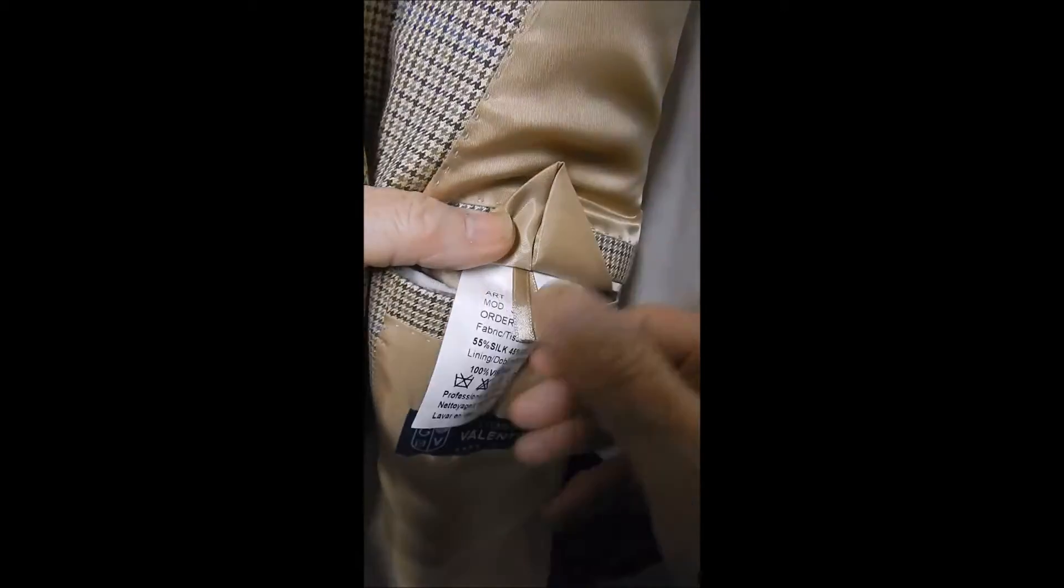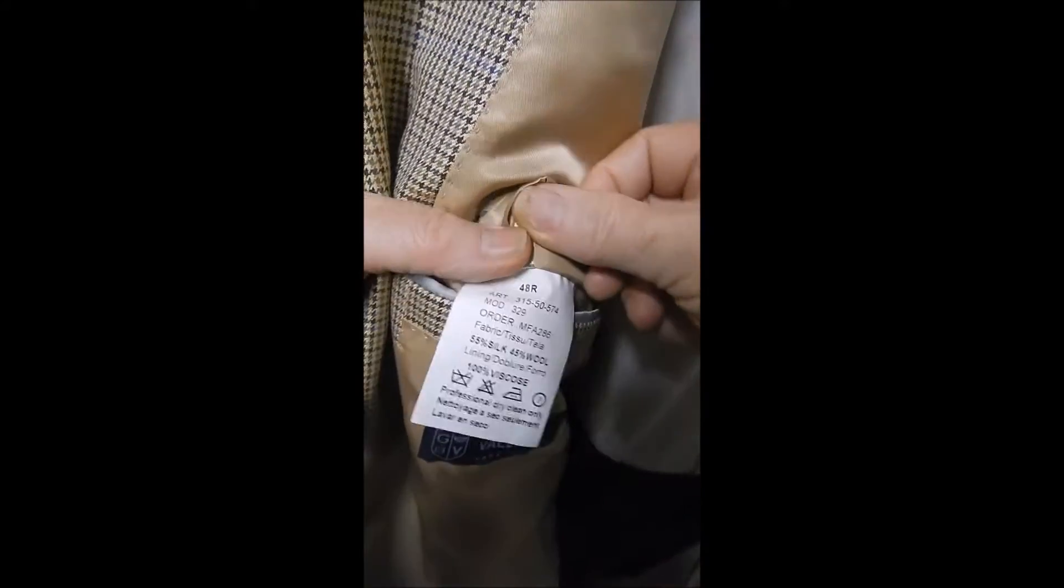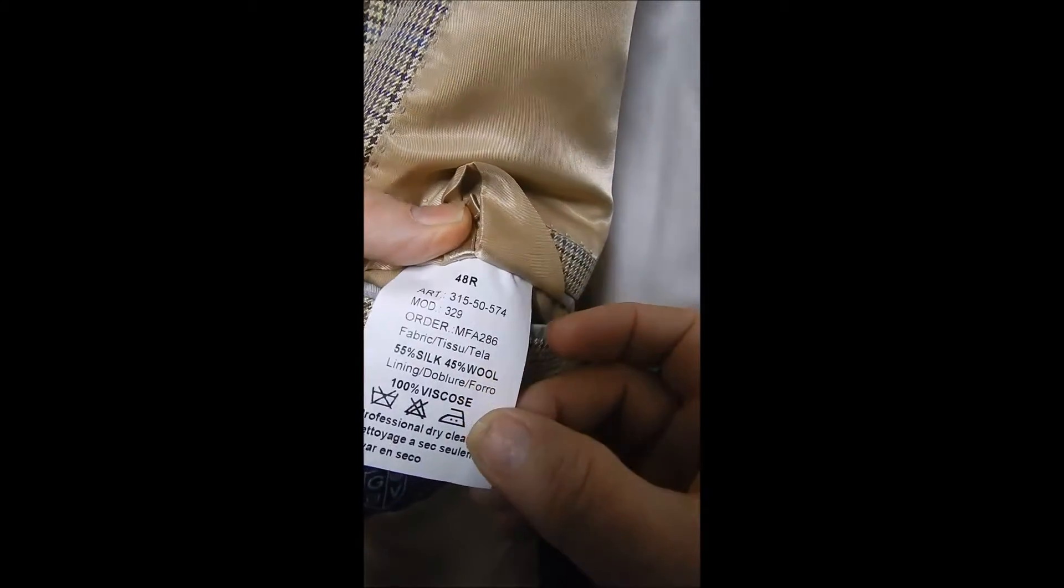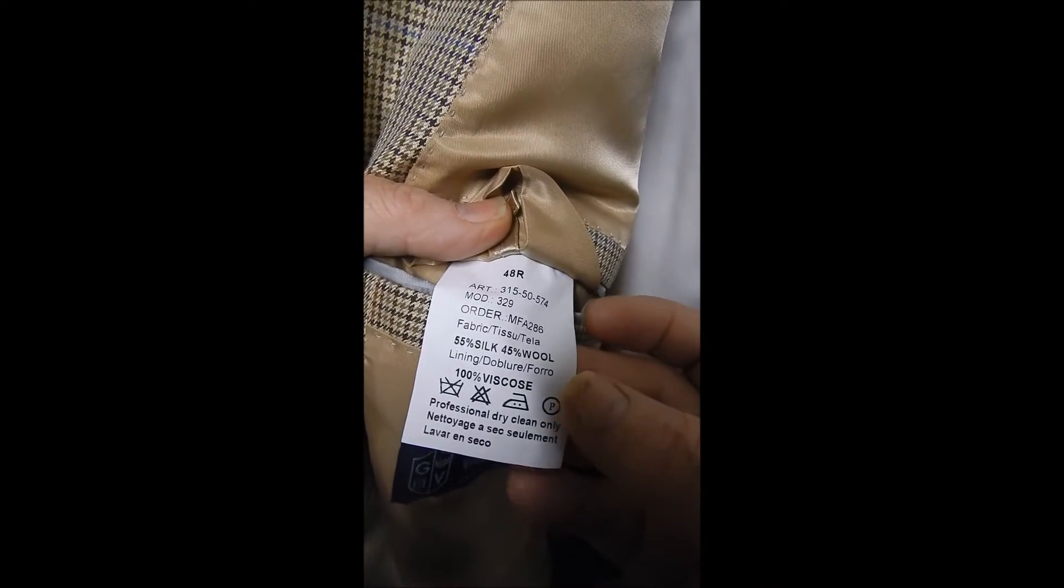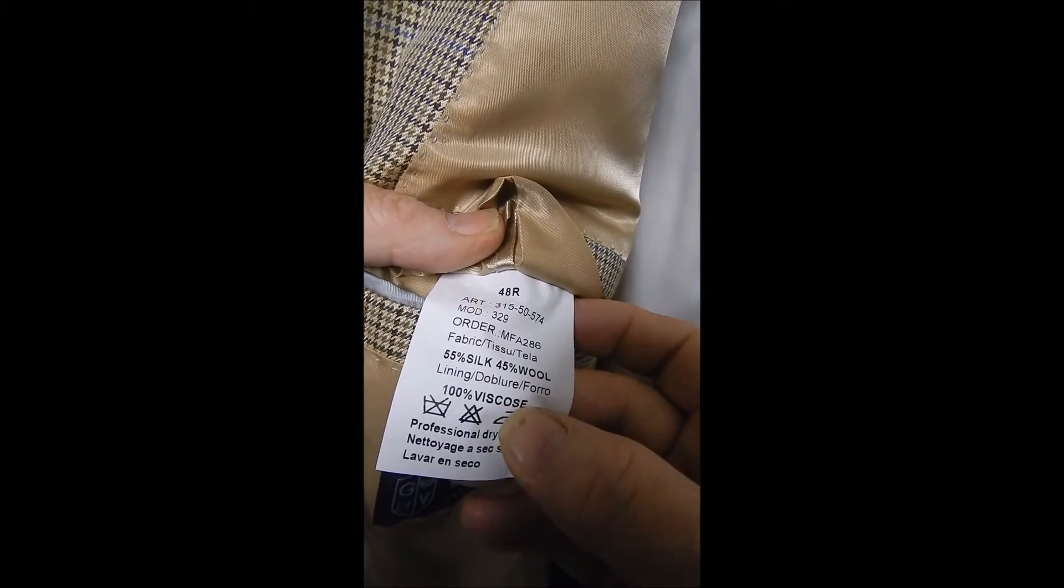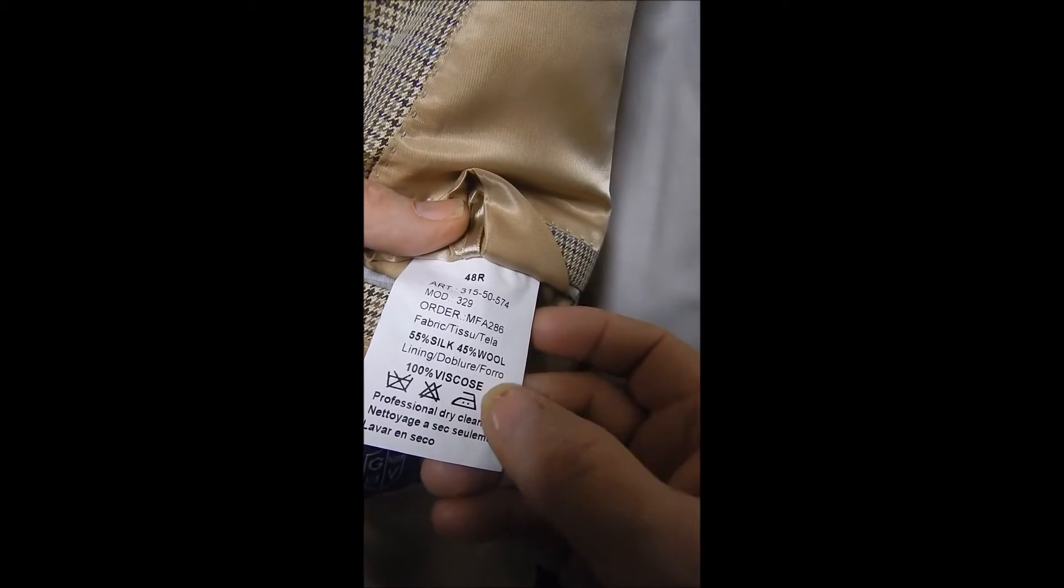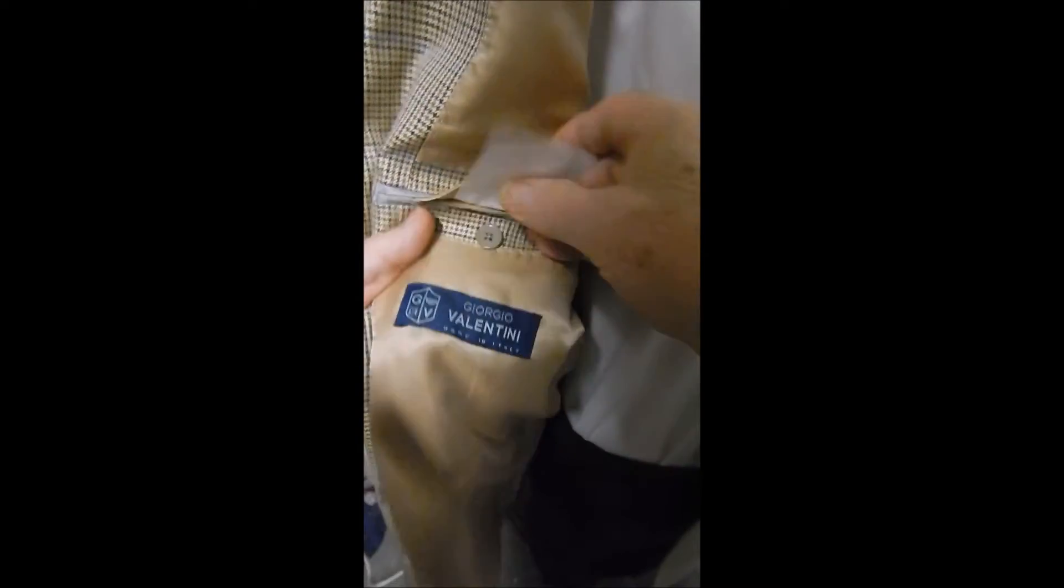Here's a label and we see that it's a 48 regular, but please measure. And it's mostly silk and wool, 55%. Here's the Valentini label.